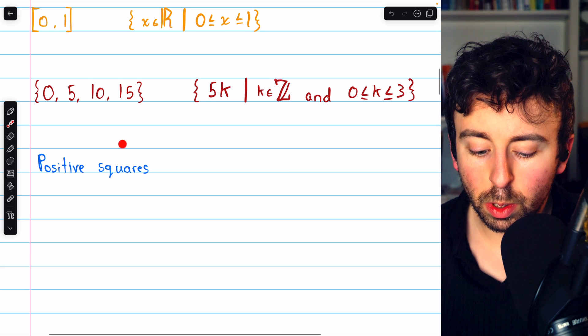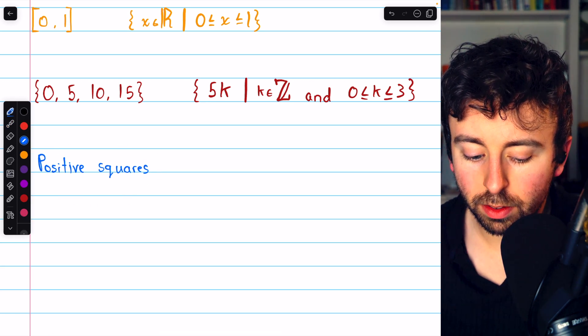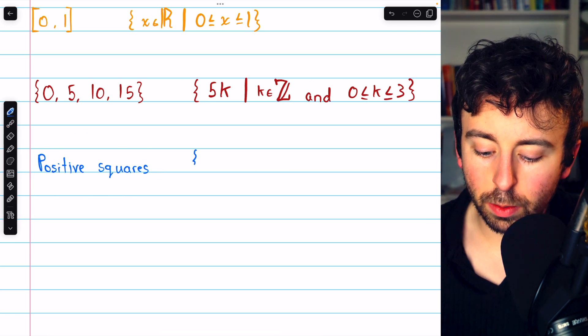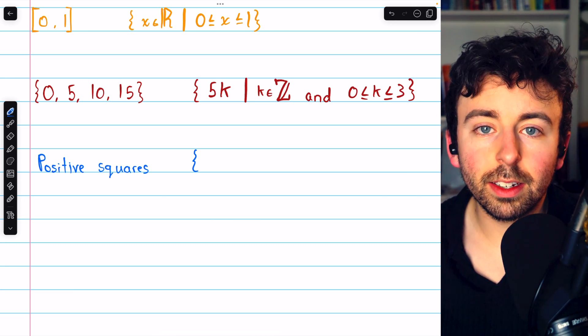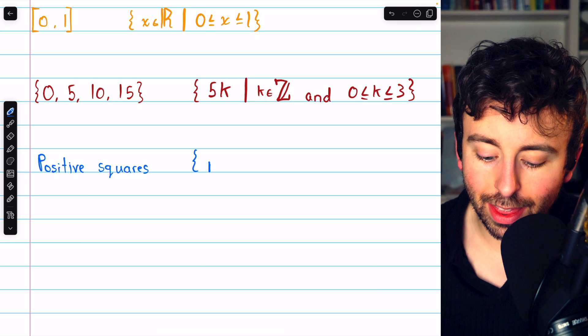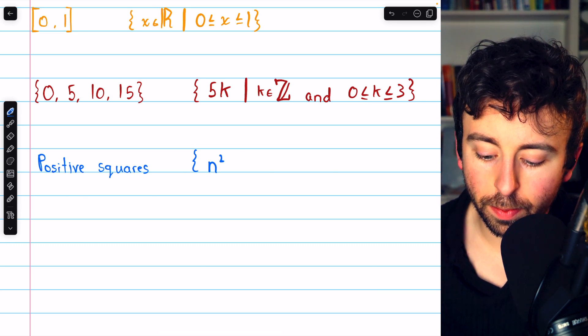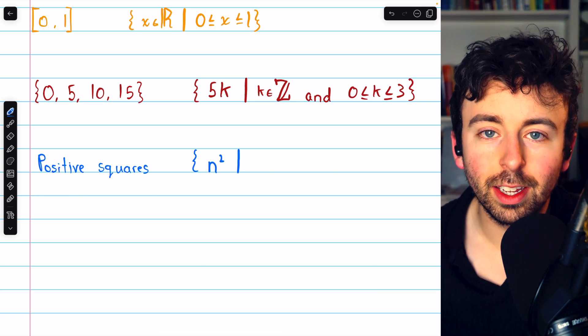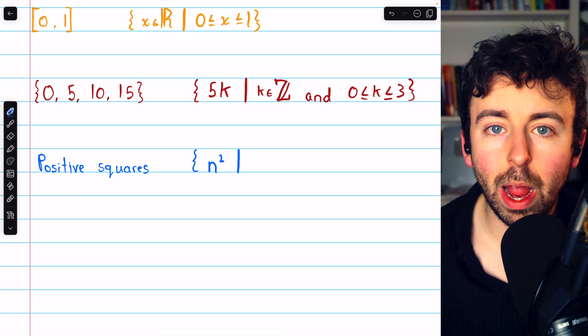Lastly, how would we write the set of positive squares using set builder notation? In this example, it would again probably be more convenient to write the general form of these elements on the left. So I'll write that as n squared. This way, it's very convenient to just say this is a set containing squares.